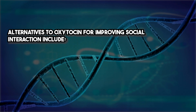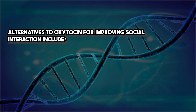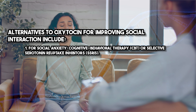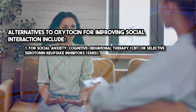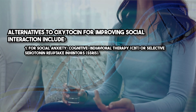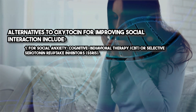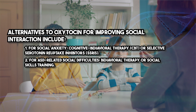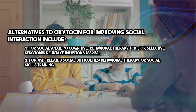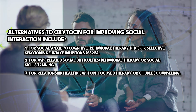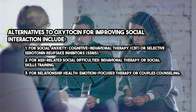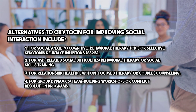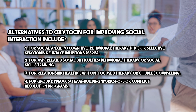Alternatives to oxytocin for improving social interaction include: for social anxiety, cognitive behavioral therapy (CBT) or selective serotonin reuptake inhibitors (SSRIs); for ASD-related social difficulties, behavioral therapy or social skills training; for relationship health, emotion-focused therapy or couples counseling; and for group dynamics, team-building workshops or conflict resolution programs.